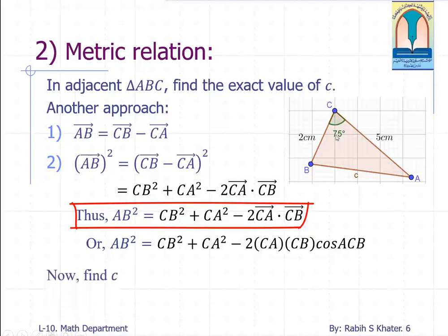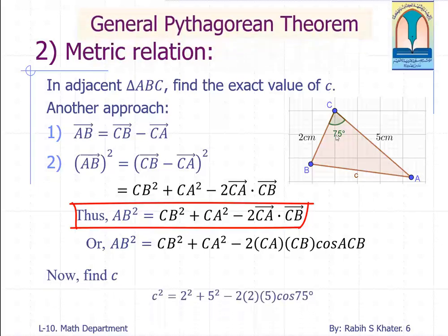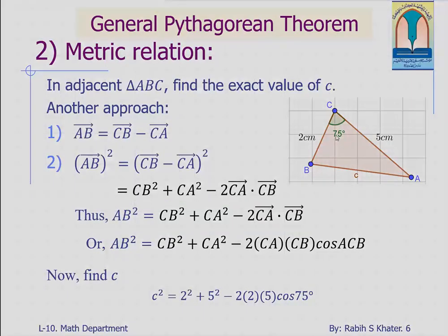This is called general Pythagoras theorem. Pythagoras theorem is used for right triangles, whereas general Pythagoras theorem with the aid of dot product can be used in any triangle. Knowing two sides and one angle included between them, we can definitely find the third side.